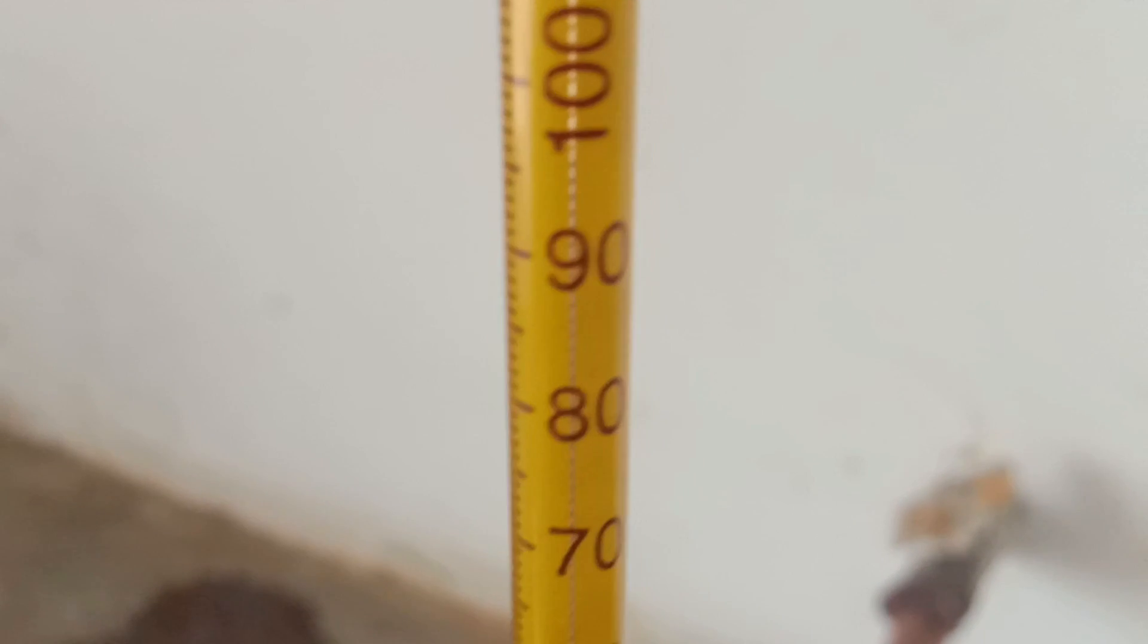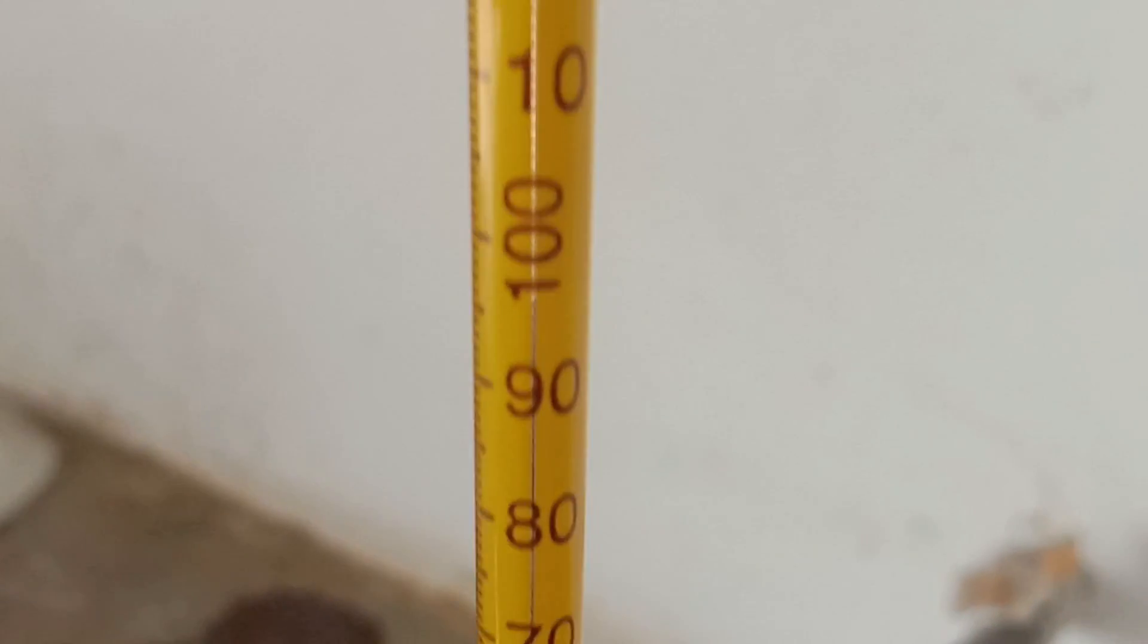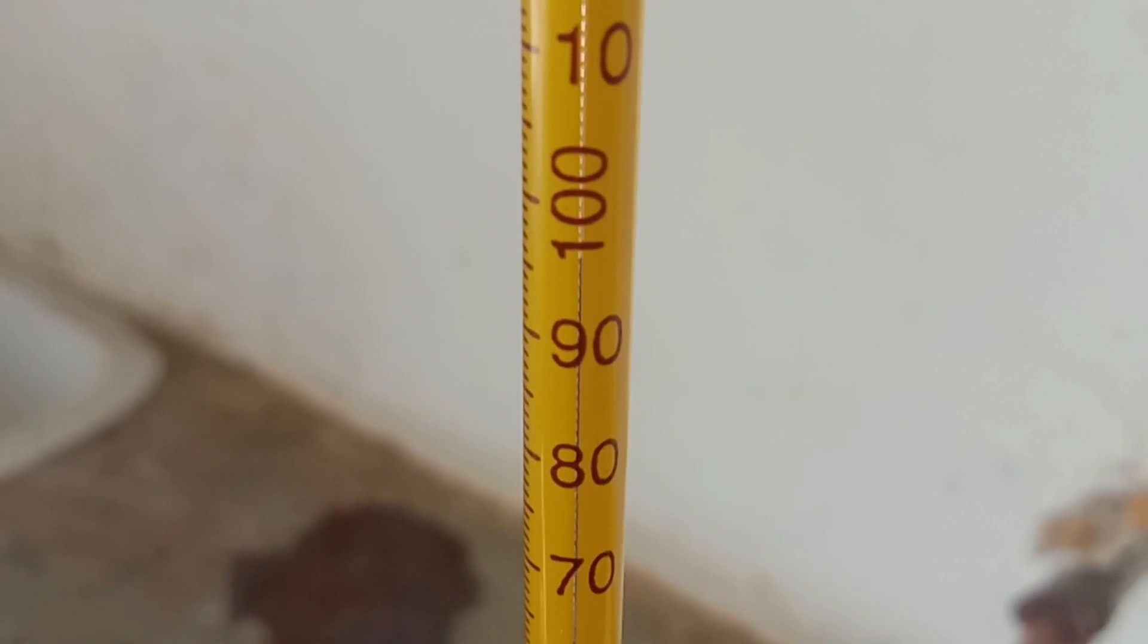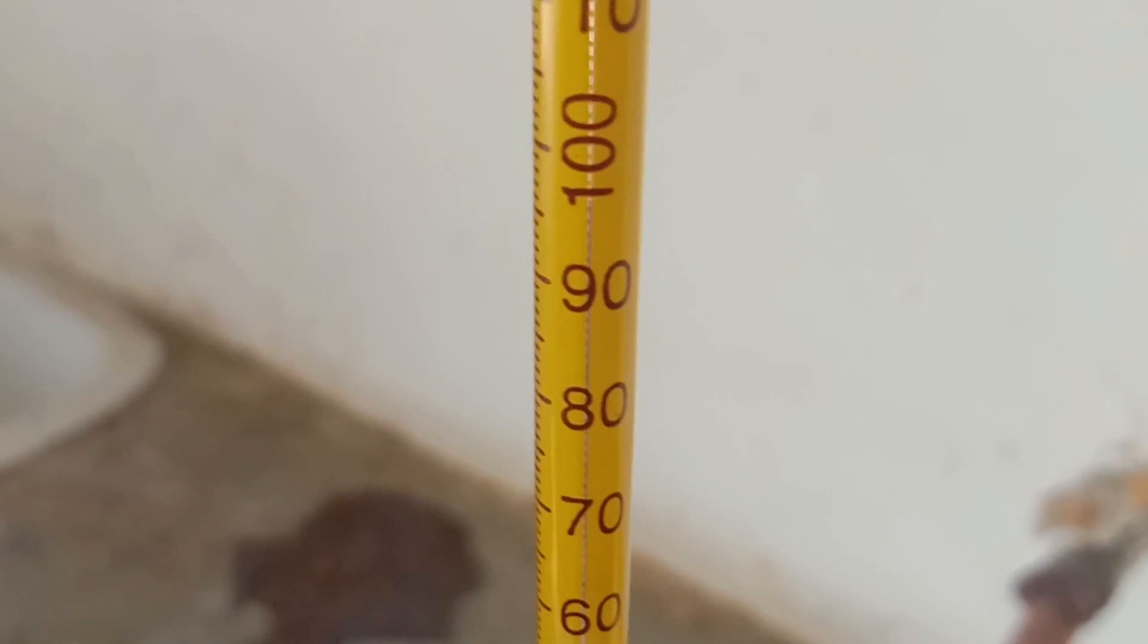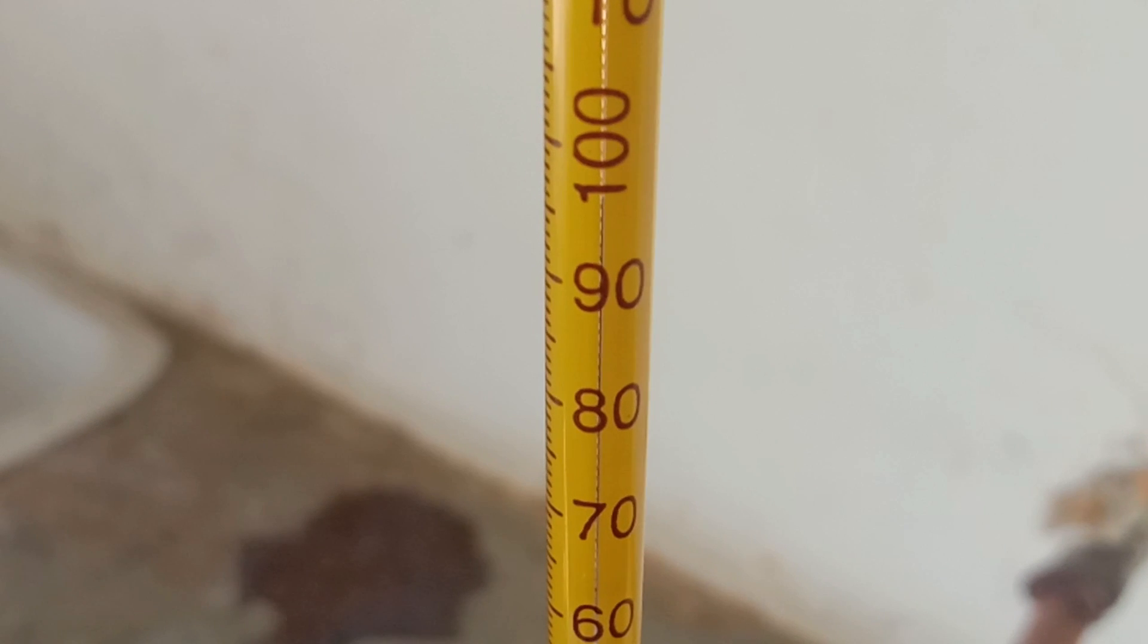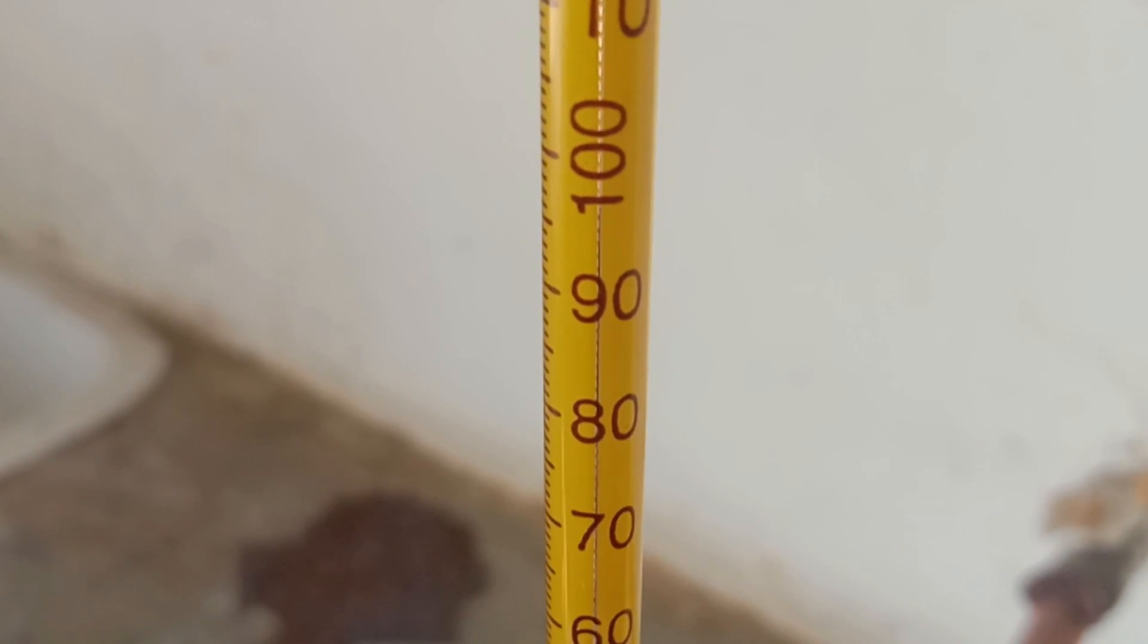We can see the temperature has crossed 95 degrees Celsius. We should be very careful that at any moment of time from right now, the temperature will stop rising even if the Bunsen burner is on. That is our boiling point.